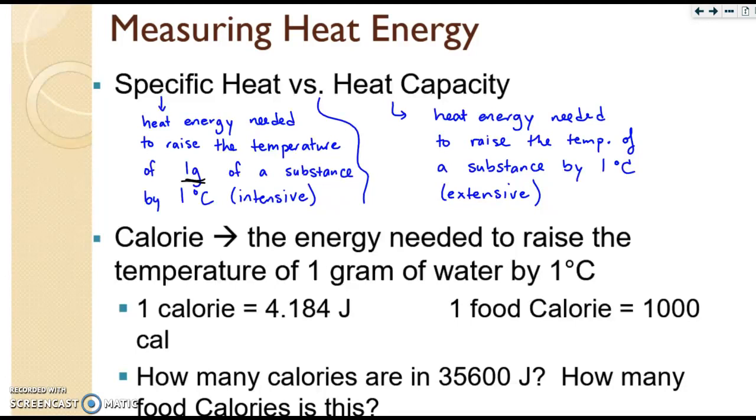The one that's really important for you to know is the specific heat of water. We usually use a lowercase c to represent specific heat. So the c of water is 4.184 joules per gram degrees Celsius. That's important.